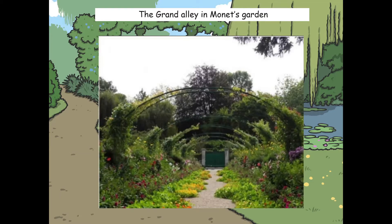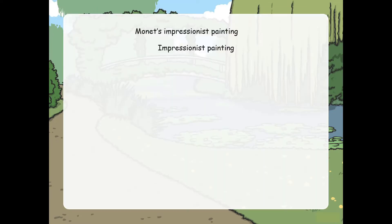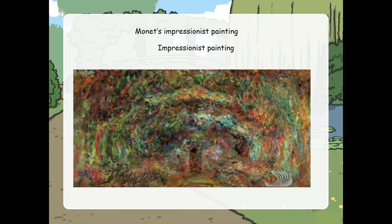This is a picture of the Grand Alley in one of Monet's gardens. Now let's have a look at the impressionist painting that Monet painted of the same thing. Can you see how he's used different painting techniques to create this beautiful painting? Look how vibrant it is and full of colour. What techniques do you think he's used to create this effect?